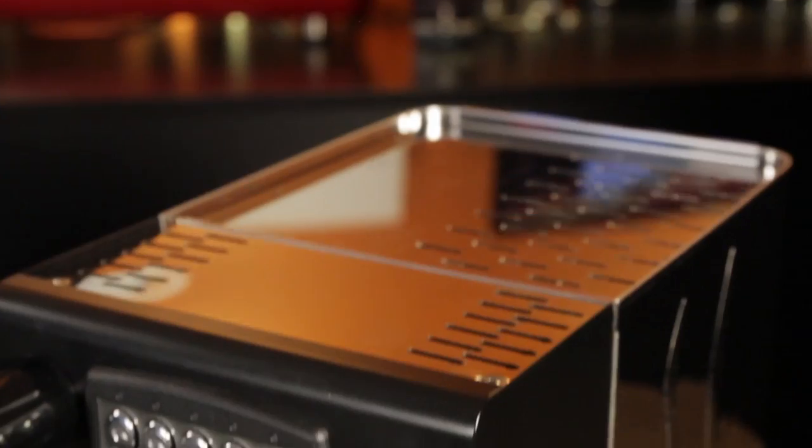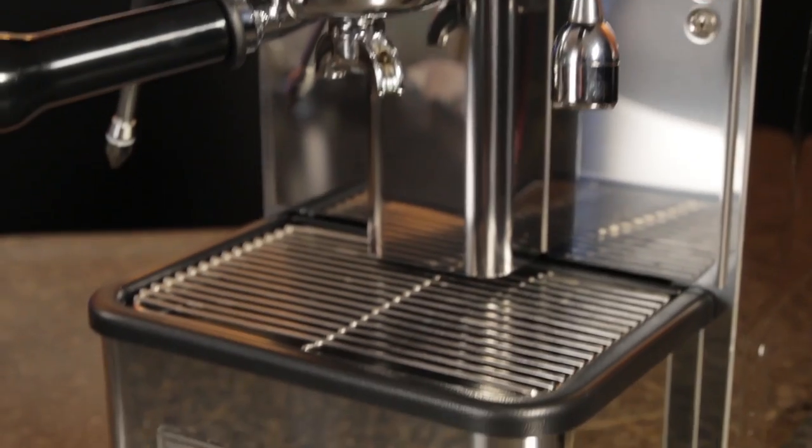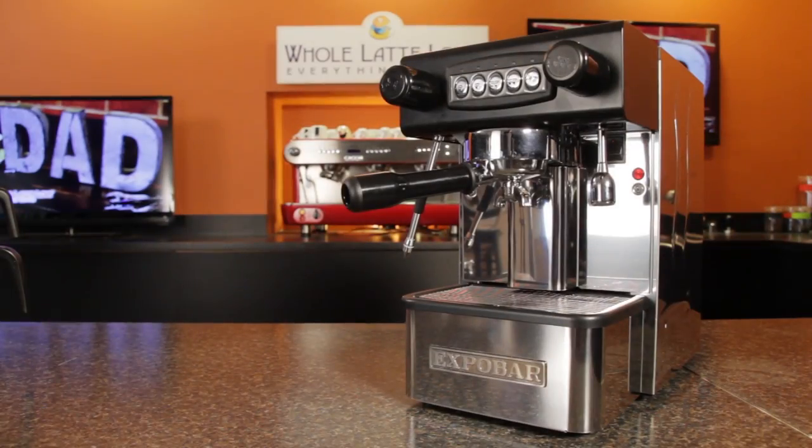If Dad's looking for a move into the espresso big leagues, have a look at the Expo Bar Office Control. It's a commercial machine sized for home and office use and one of our best values on a price-performance basis.